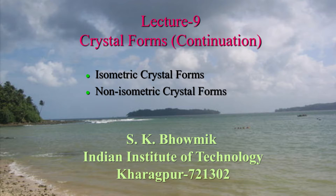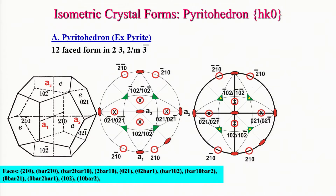We will cover crystal systems belonging to triclinic, monoclinic, orthorhombic, tetragonal, trigonal, and hexagonal crystal systems. Let us look at the next isometric crystal form. The form symbol here is hk0, where h is not equal to k. We will discuss this form using a representative crystal face which is 2 1 0.